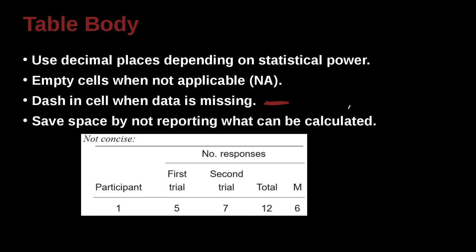Save space by not reporting what can be calculated. So if there are numbers that can be calculated by the user, by the reader, you do not need to also report those. For example, totals and sums and subtotals. Don't add all those things if people can just take a calculator and do it for themselves.